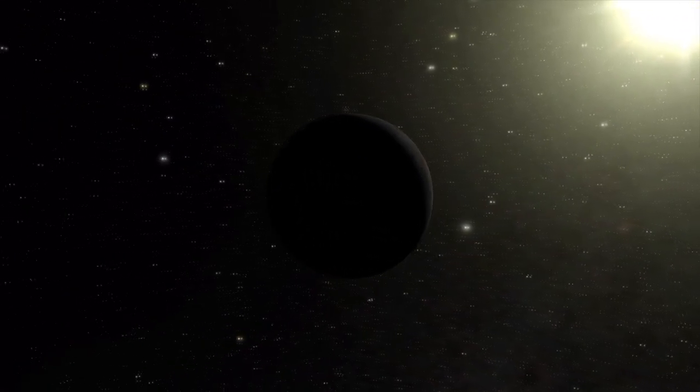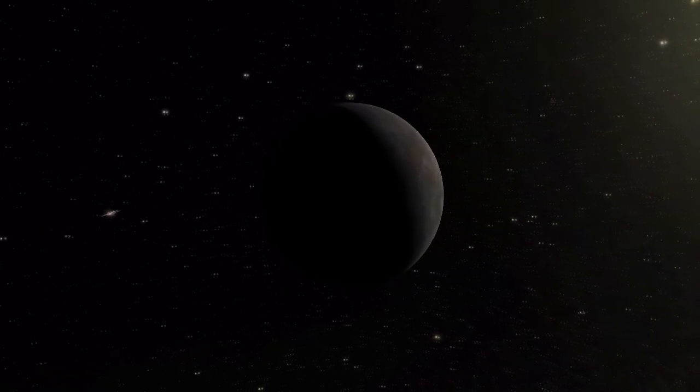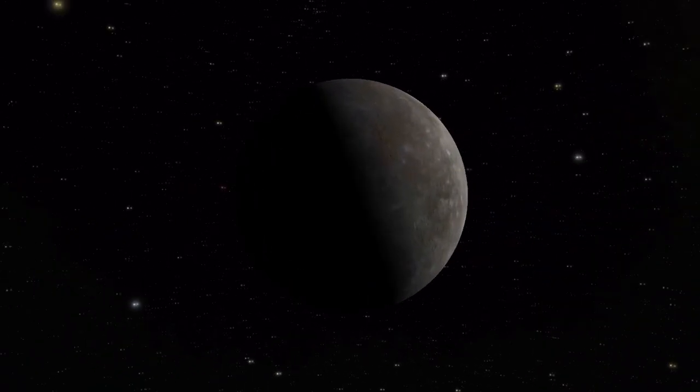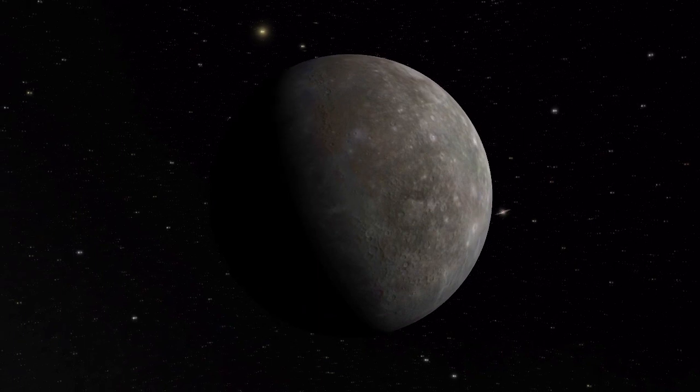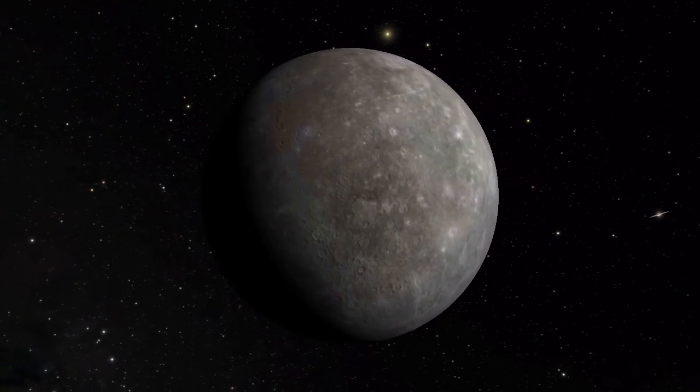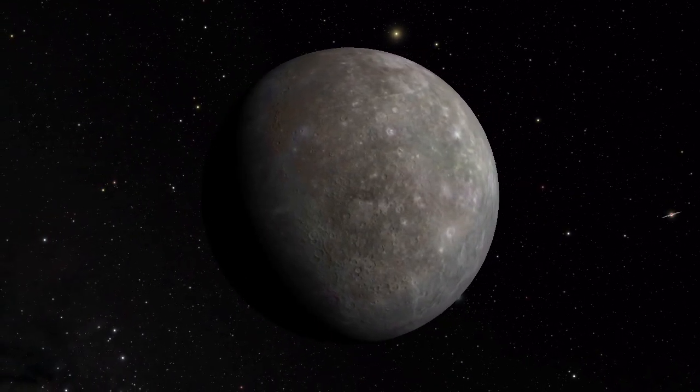Mercury is a strangely dense planet compared to the other worlds in the Solar System. Now, if it formed from the same stuff as Venus and Earth, why would it be different? A world-shattering impact could be the answer.